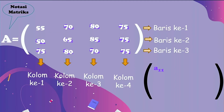Perhatikan di sini, ketika angka 55 — angka 55 ini terletak pada baris pertama, kolom pertama. Maka kalau disimbolkan dengan huruf, angka 55 ini menjadi A₁₁. Sedangkan angka 70, dia berada di baris pertama, kolom kedua, maka dia menjadi A₁₂. Begitu juga dengan 80 menjadi A₁₃, dan 75 menjadi A₁₄ karena mereka berada di baris pertama.